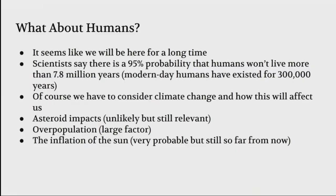What about humans? Extinction for humans. It seems like we're going to be here for a long time, but scientists say there's a 95% probability that humans won't live more than 7.8 million years. Modern day humans have already existed for 300,000 years. To make our time short, we have to consider climate change effects, asteroid impacts—unlikely but still relevant—overpopulation, which is a very large factor, and the inflation of the sun, very probable but still very far from now.